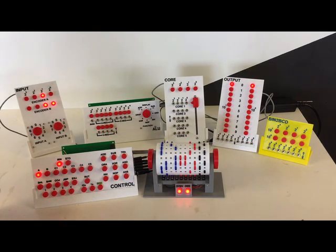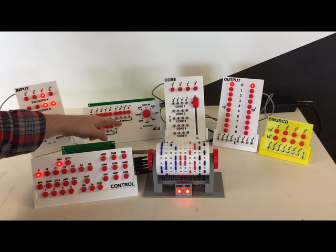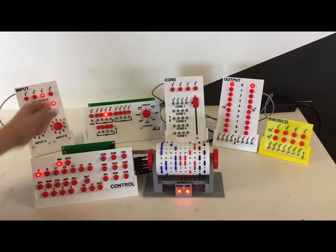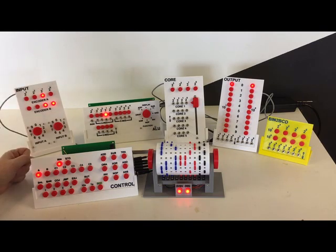So the first instruction is RIN, which is a read-in instruction. Read-in A. That's encoder A or input A, and that's 2. And it's asking us to read that number into the accumulator, which is back here. So I'm going to go ahead and do that. I have now input the encoder A value into the accumulator.